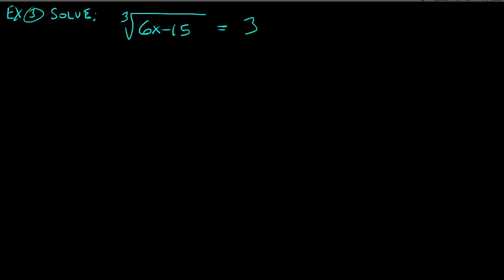You're not likely to see many problems with cube roots, but let's do one just in case. Step one: isolate the radical. There's nothing else on the left — it's just the cube root of everything. Notice you cannot add the 15 to both sides because the 15 is under the cube root. It's already isolated, so move on to step two: get rid of the cube root.